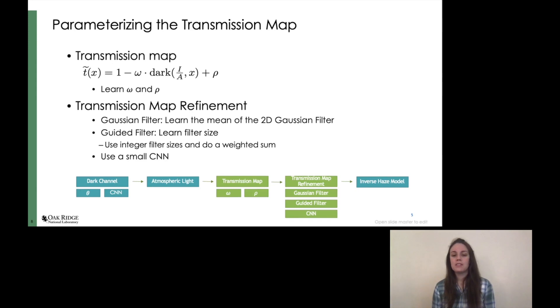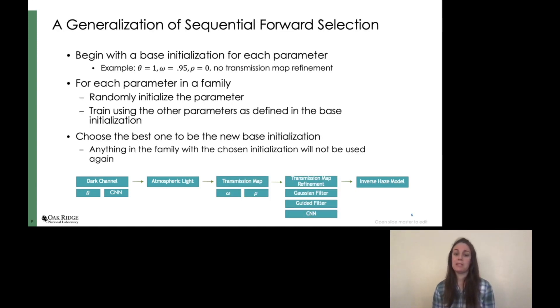So then we also parameterized the transmission map construction. We introduced additive and multiplicative parameters. And we parameterized a few common filters that are used to refine the transmission map. We also allowed the possibility of using a small convolutional neural network to refine the transmission map. Some of these parameters cannot be used at the same time. For example, we can either use a convolutional neural network parameterization of the construction of the dark channel prior, or theta, but we can't use both.